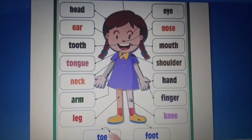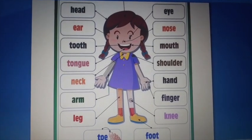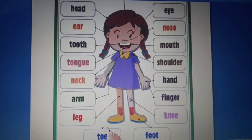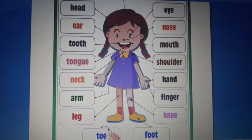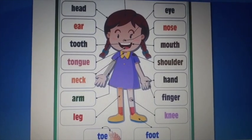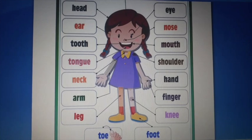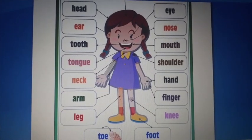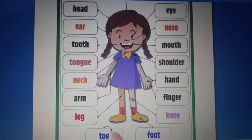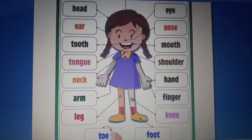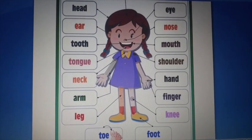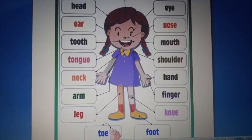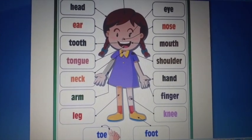I have drawn a picture here — look at it. Is this a boy or a girl? Yes, this is a girl. I have drawn a girl and mentioned all the parts of the body. Our body is very special. Although we may all look different, the organs in our body are the same. Every part of the body has some work to do.